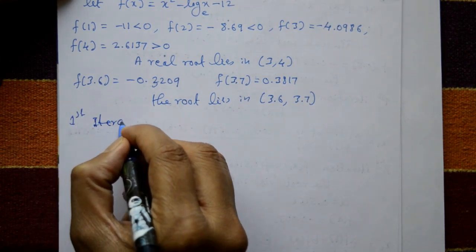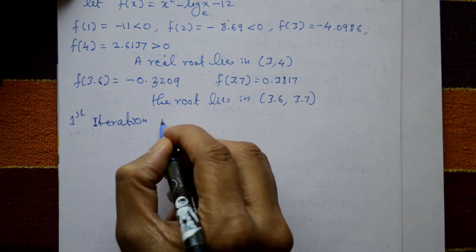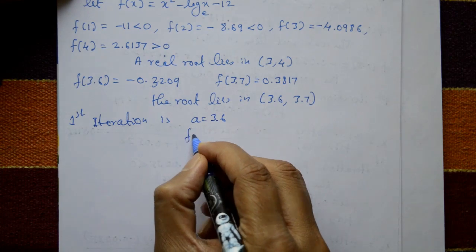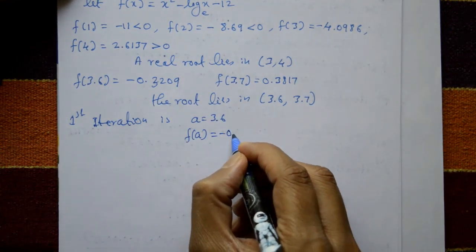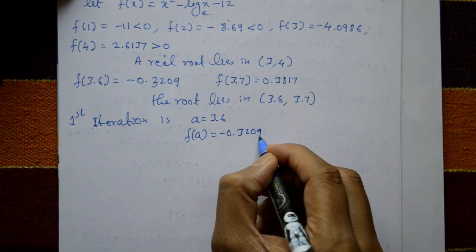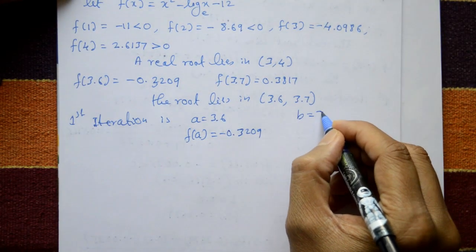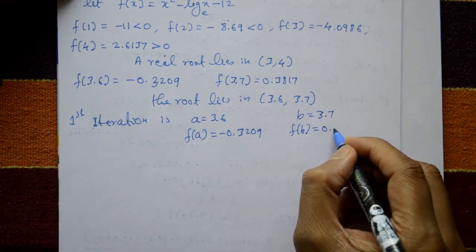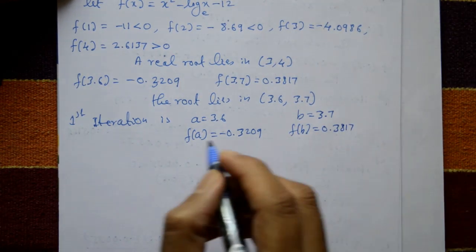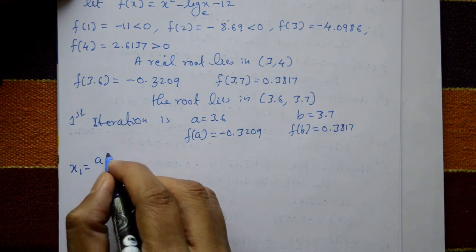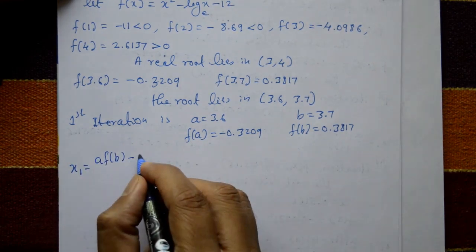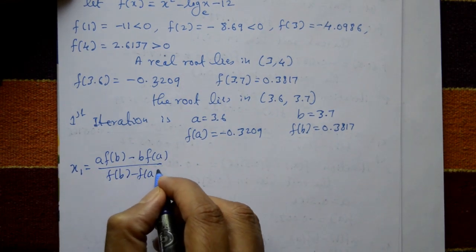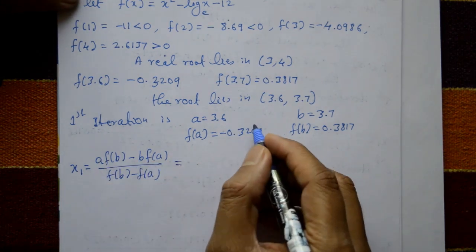First iteration: a = 3.6, f(a) = minus 0.3209, b = 3.7, f(b) = 0.3817. Using the Regula Falsi formula: x1 = [a × f(b) minus b × f(a)] divided by [f(b) minus f(a)].